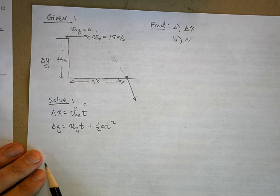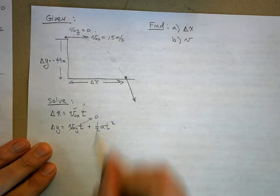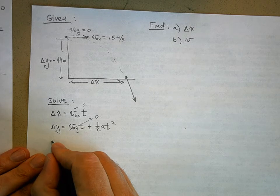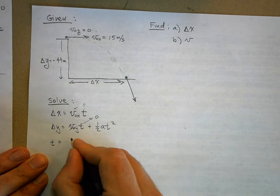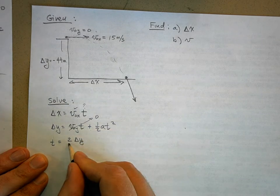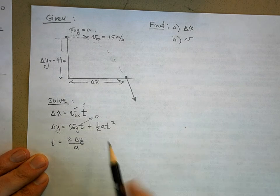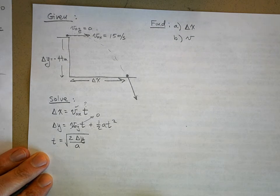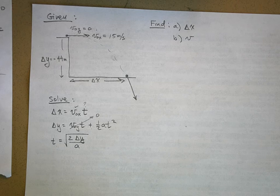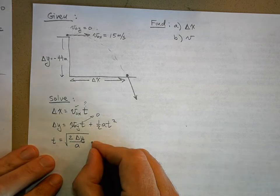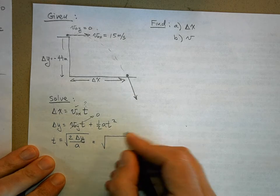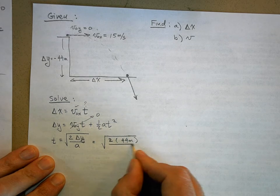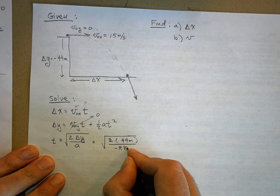Using the third kinematic equation, V-naught-Y times T is zero, so Delta Y equals one-half A T squared. Solving for T: multiply both sides by 2, divide by A, then take the square root of both sides. That gives T equals the square root of two times 44 meters over negative 9.8 meters per second squared.